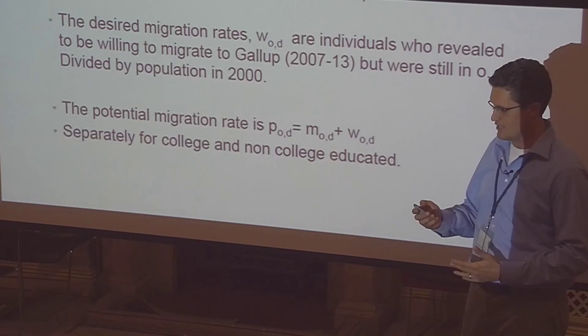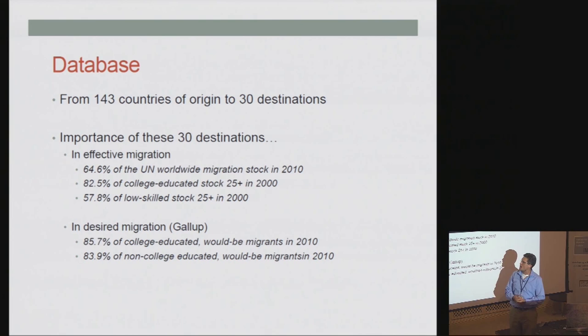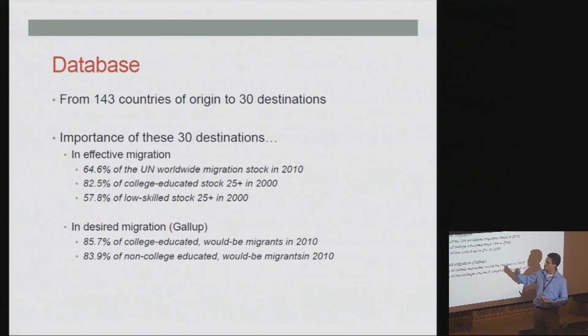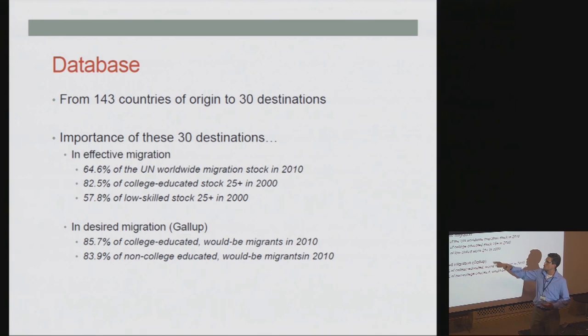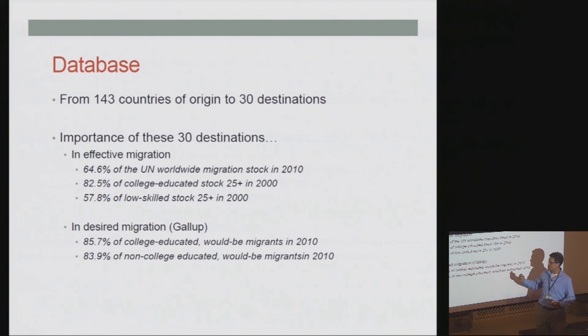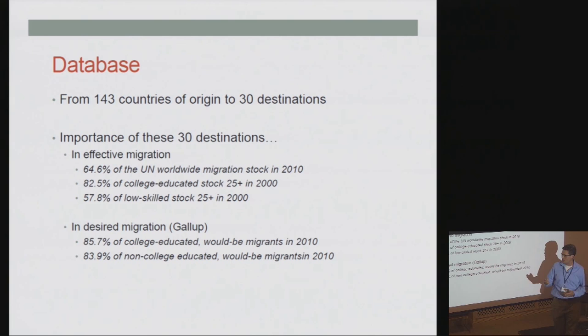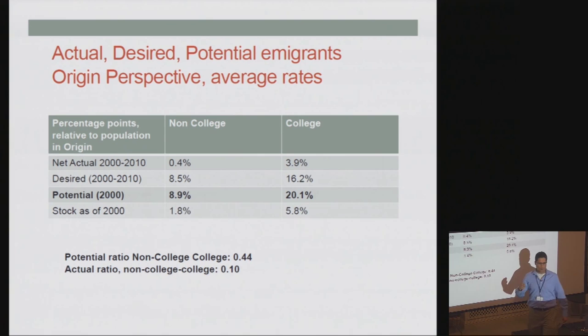The dataset has 143 countries of origin and 30 destinations. These 30 destinations receive the majority of migrants — about two-thirds of all migrants worldwide go to these 30 destinations, and more than 80% of the highly skilled. In terms of desired migration revealed by the Gallup poll, 85% of people interviewed said they would like to go to one of these 30 countries. The first figure compares net migration, desired migration, potential migration, and the stock of migrants.